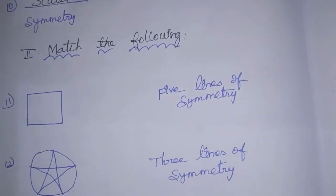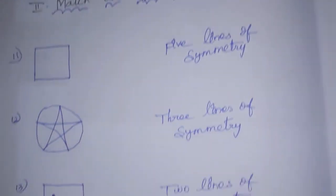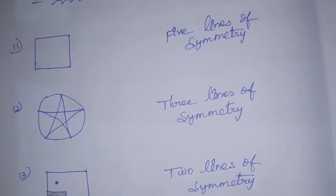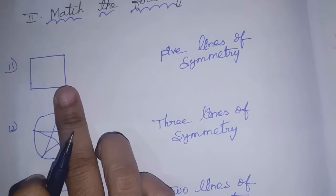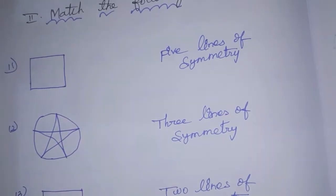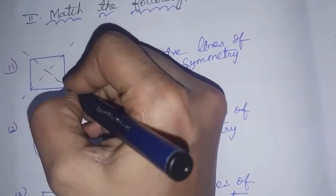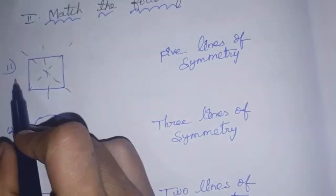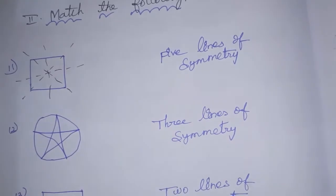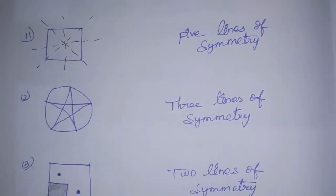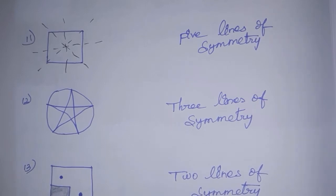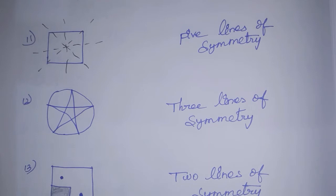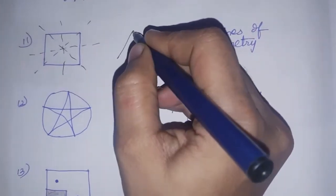Second Roman number — match the following. This diagram has no line of symmetry. A square has 4 lines of symmetry. If you have any line of symmetry, the diagram has no line of symmetry. What is the diagram? An isosceles triangle — it has two equal sides, so you can see one line of symmetry.